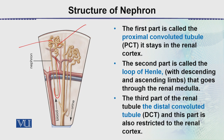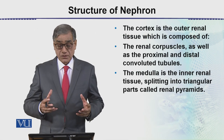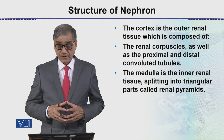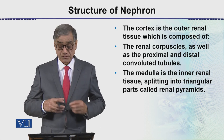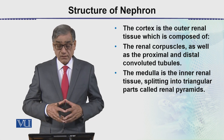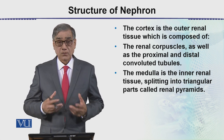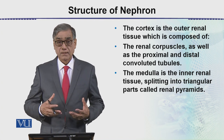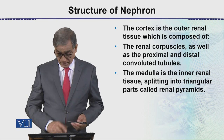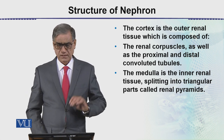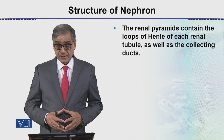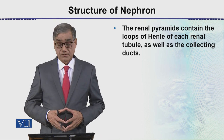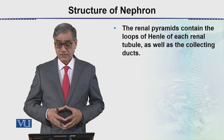This is how the nephrons are arranged within the kidney. The cortex is the outer renal tissue composed of the renal capsules as well as the proximal and distal convoluted tubules. The medulla is the inner renal tissue, splitting into triangular parts called the renal pyramids.